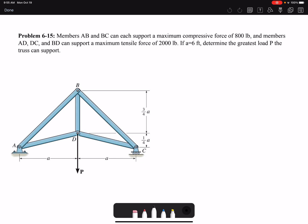If A is 6 feet, determine the greatest load P the truss can support. So two of our members are going to have compressive forces, and then the other three are going to have tensile forces.